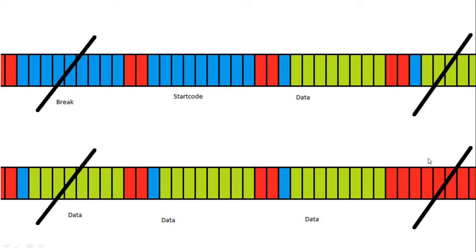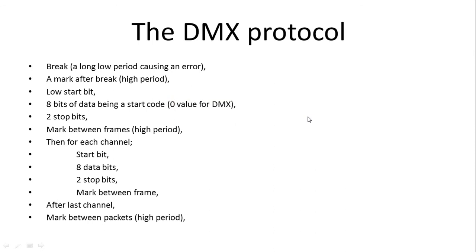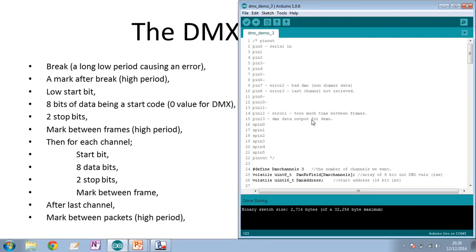DMX doesn't have to send all 512 channels — it can send fewer. Then it would start again with another break. Let's have a look at how this is actually implemented within the RDMX code.